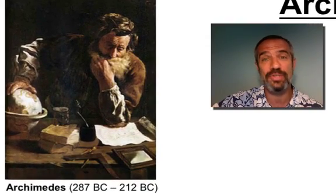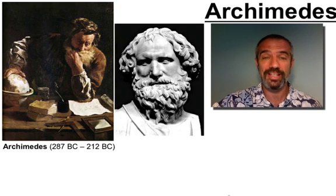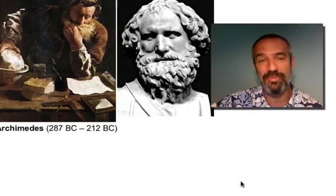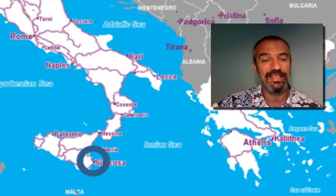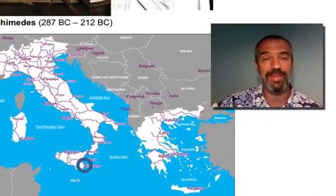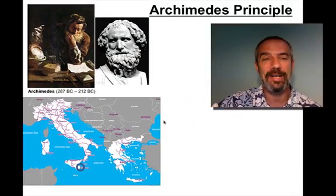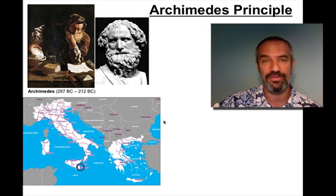Archimedes lived in the third century BC. Here's a painting of him, and here's a statue that gives you an idea of what he looked like. A genius of a man — he came from Syracuse, which was then part of the Greek Empire, actually located in Sicily, not far from Athens. He was known as the Einstein of his time, maybe even greater — probably the greatest thinker of ancient times. He was an inventor, a philosopher, a mathematician, an extraordinary person.